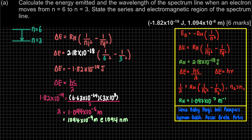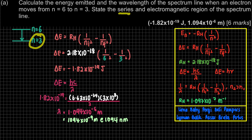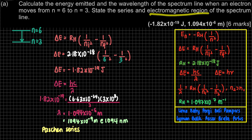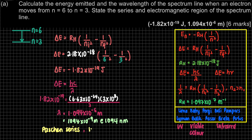The question hasn't finished yet. Next part: state the series and electromagnetic region of the spectrum. For series, we refer back to the lower energy level, which is 3. Using the mnemonic 'lemon balik pasar beri putus', the third one is 'pasar', which is the Paschen series. For the electromagnetic region: Lyman is ultraviolet, Balmer is visible, and Paschen — which is the third — is in the infrared region.